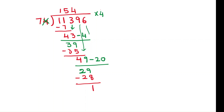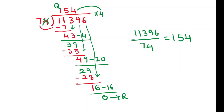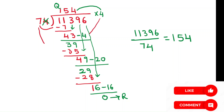Now bring down the next number, which is 6. When bringing down, work with the last digit of the divisor and last digit of the quotient: 4 times 4 is 16. That gives 0 — the remainder is 0 and 154 is the quotient. So 11396 by 74 is 154. Here we alternate: one time with 7, one time with 4 — we are repeating this process throughout.